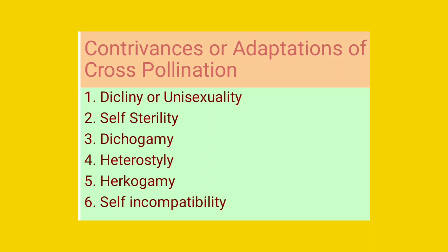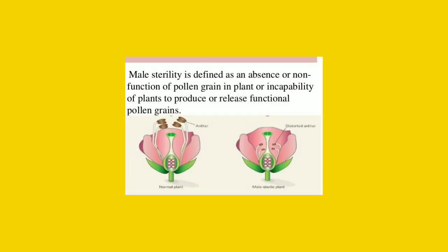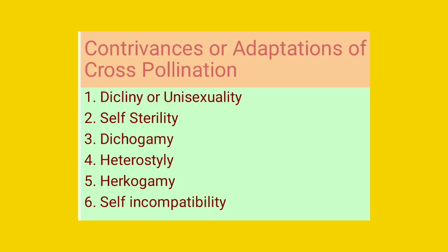The next contrivance is self-sterility. Self-sterility means functionless — sometimes in some bisexual flowers the pollen grains are sterile, or sometimes the ovules become sterilized. The pollen grains of some flowers cannot fertilize the ovules of the same flower and therefore go to fertilize the ovules of another flower. This is found in orchids, potato, tobacco, etc., where we observe self-sterility — the flower is bisexual but because of the sterile condition, it fertilizes the ovules of another flower.